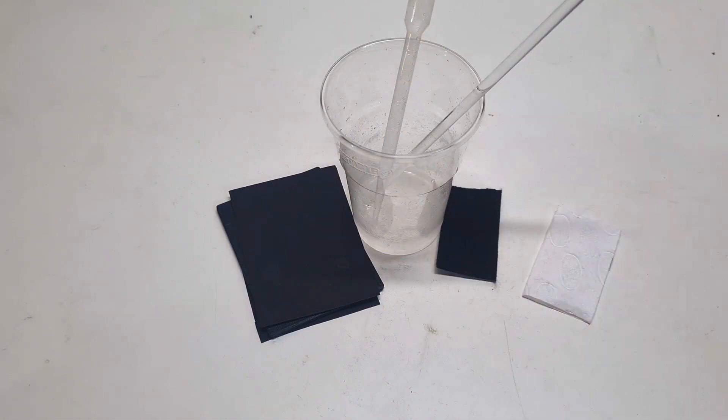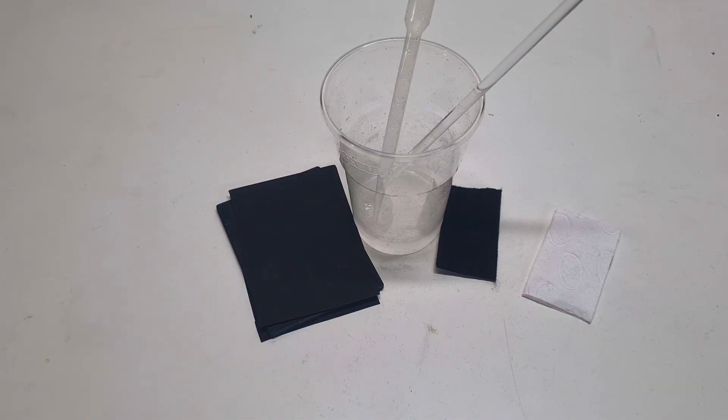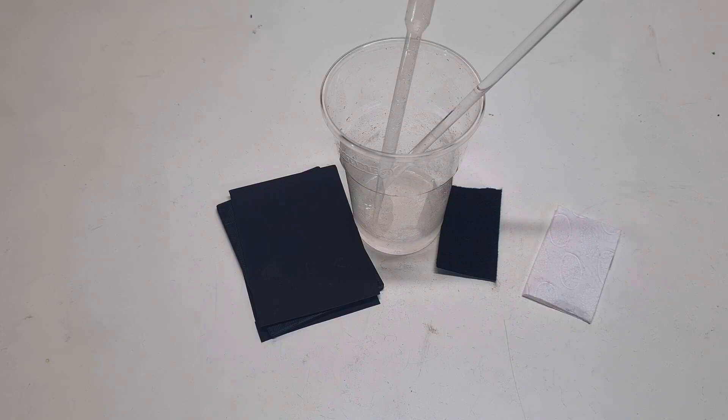And for the last the electrolyte which is made from 3 mol of zinc bromide, 1 mol of potassium bromide, 0.5 mol of bromide complexing agent which is made from tetrabutylammonium bromide. And for the last I also use some 2% of polyethylene glycol 200.